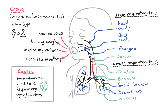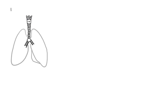The larynx is also known as the voice box. It has many functions including phonation, the cough reflex, and protection of the lower respiratory tract. In croup, the larynx, trachea, and bronchi are inflamed — that is why croup is called laryngotracheobronchitis.